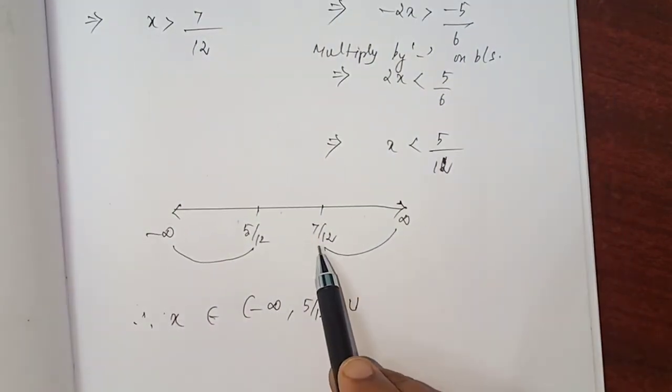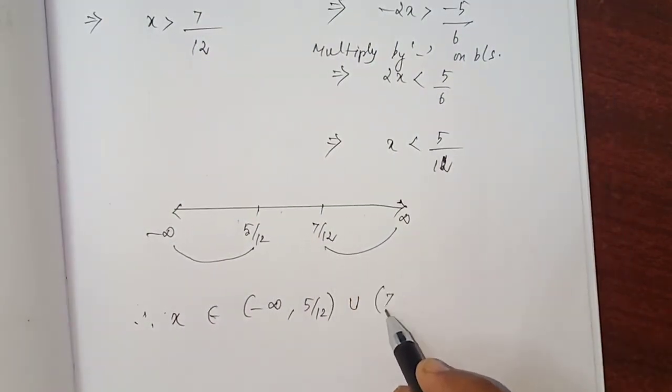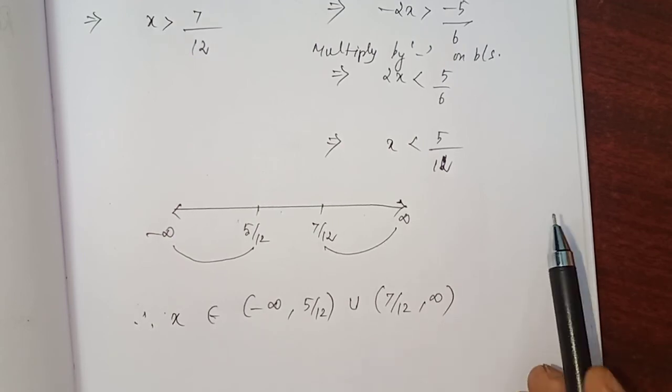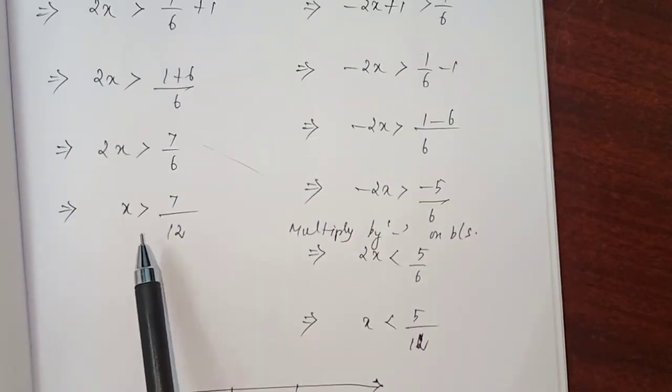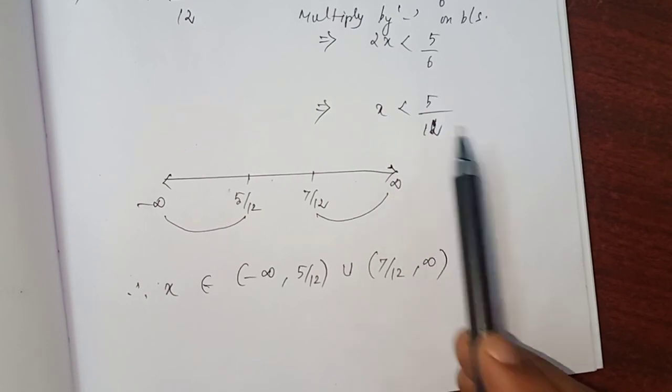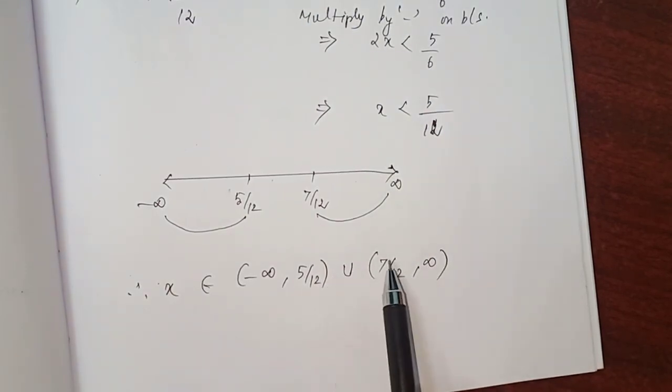Here, in this interval, starting one is 7 by 12, ending one is infinity. 7 by 12 comma infinity. That means look at the symbol, excluding 7 by 12 because we have strictly greater than. Here we strictly less than. So, write open left open bracket. That is the solution.